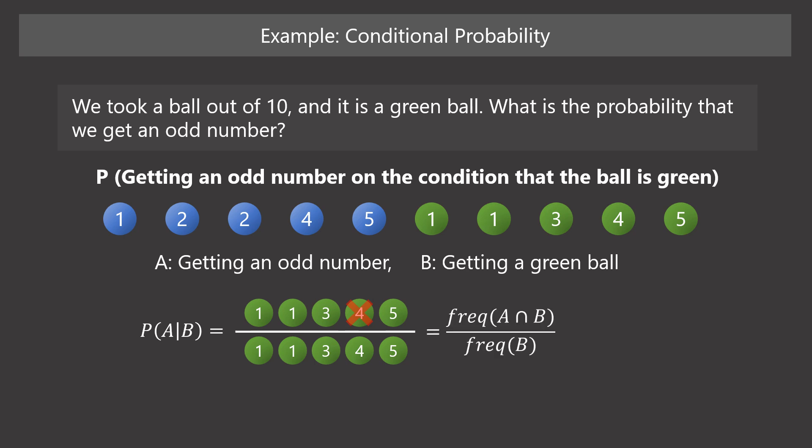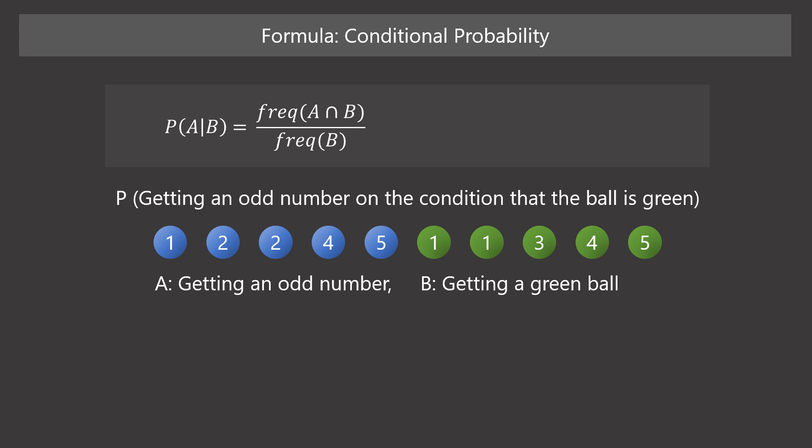The denominator is event B's frequency and the numerator is the frequency of A and B's intersection. This is the formula for computing the conditional probability of A given B.